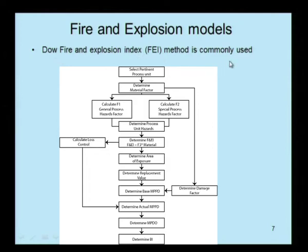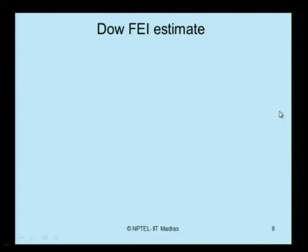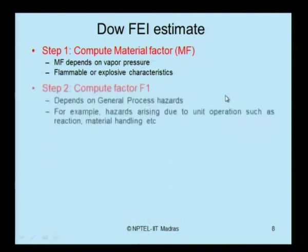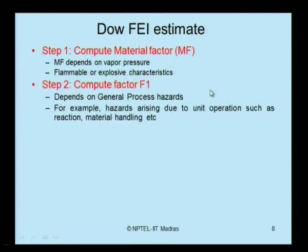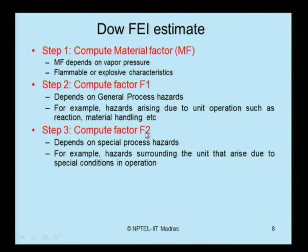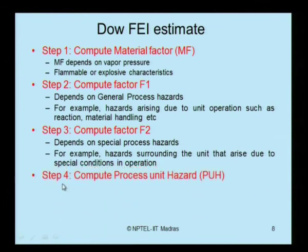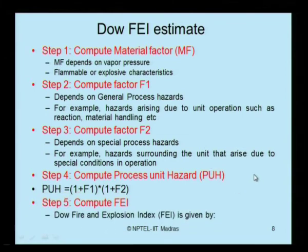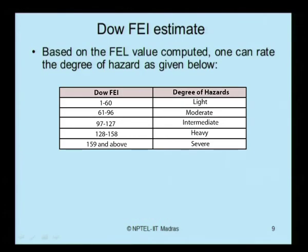The DOE Fire and Explosion Index (FEI) method is commonly used for fire and explosion models. The flowchart to compute FEI is as follows: Step 1 — compute the material factor, which depends on flammability and explosive characteristics. Step 2 — compute factor F1, which depends on general process hazards such as unit operations like reaction and material handling. Step 3 — compute factor F2, which depends on special process hazards arising from special conditions in operation. Step 4 — compute the Process Unit Hazard (PUH), given as (1 + F1) × (1 + F2). Finally, compute the DOE Fire Explosion Index as: material factor × PUH.